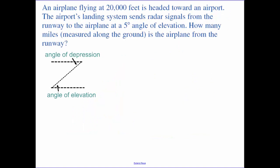An airplane flying at 20,000 feet is headed towards an airport. The airport's landing system sends radar signals from the runway to the airplane at a 5 degree angle of elevation. How many miles measured along the ground is the airplane from the runway? So if you think about it, our airport is here. We have an airplane.